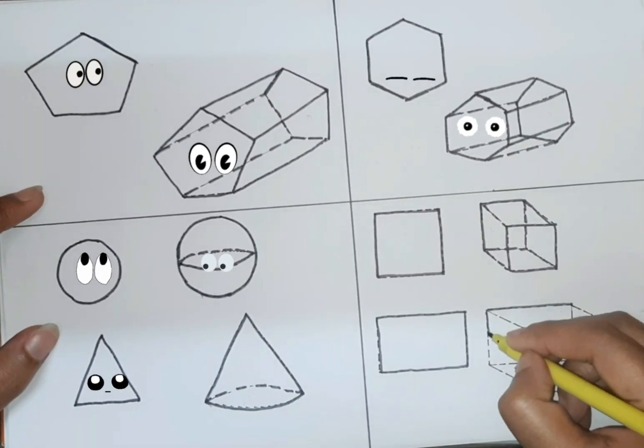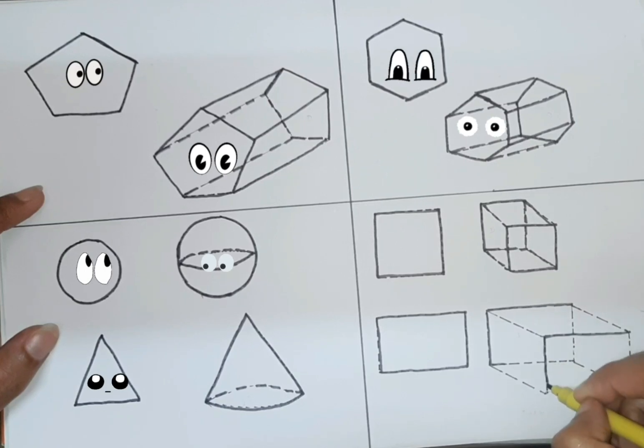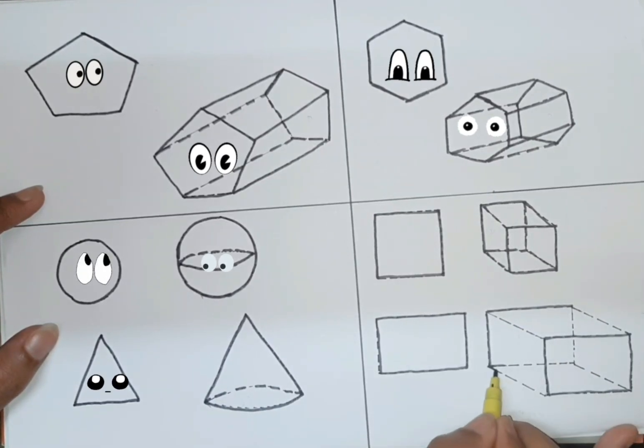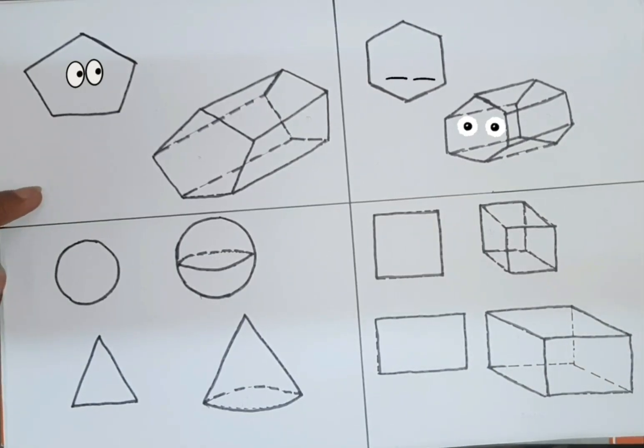And it is rectangular prism, also known as cuboid. And it has 2 equal opposite sides.